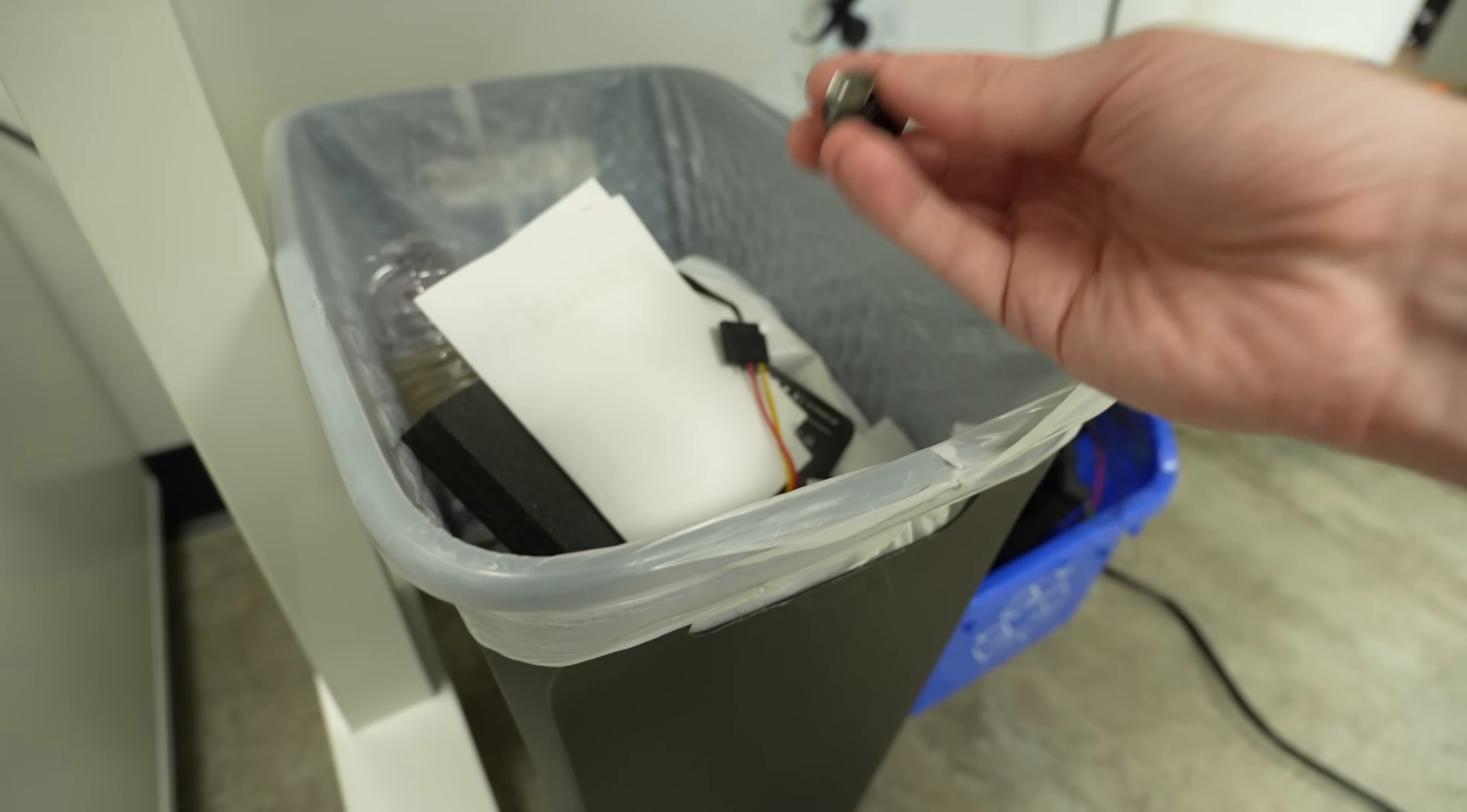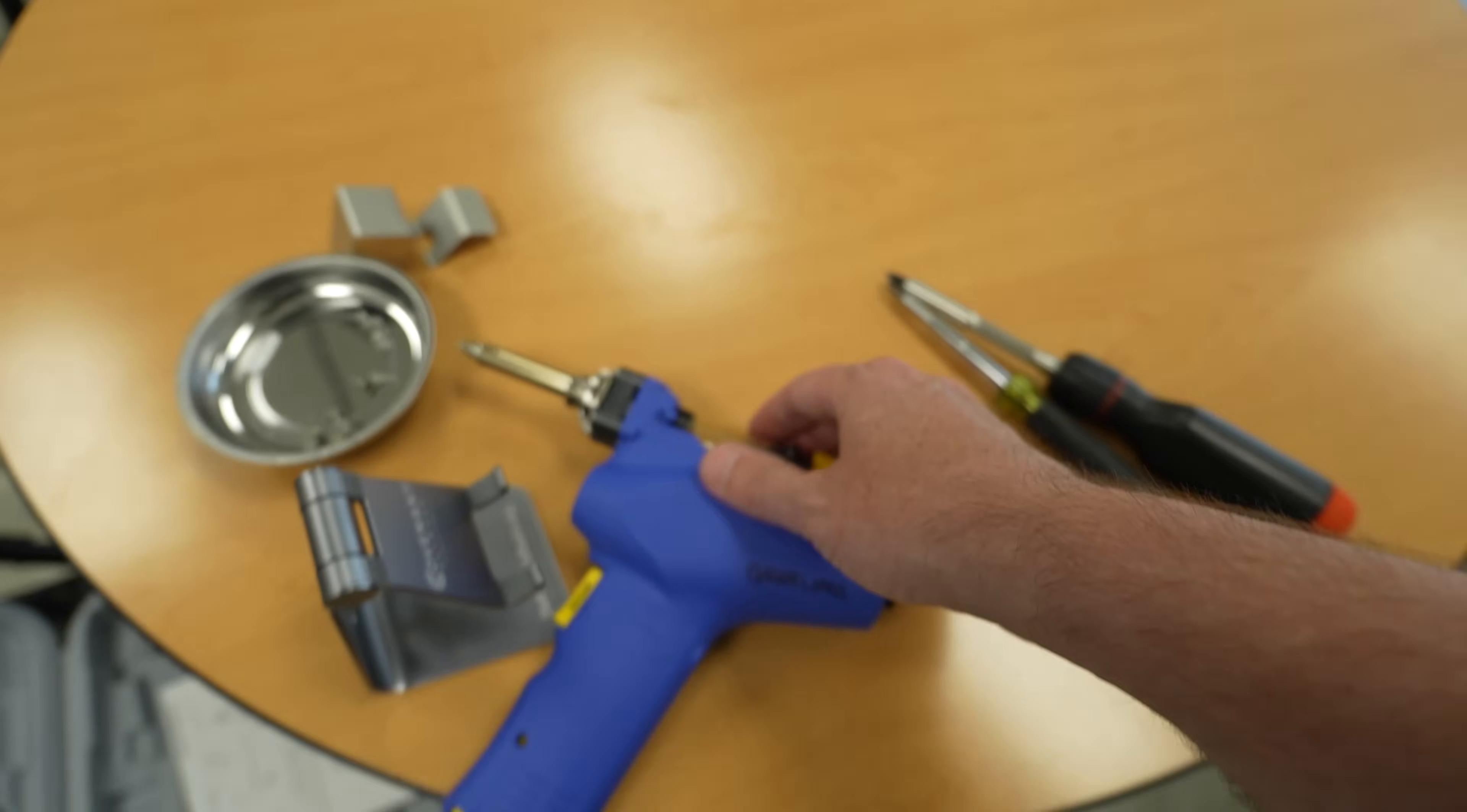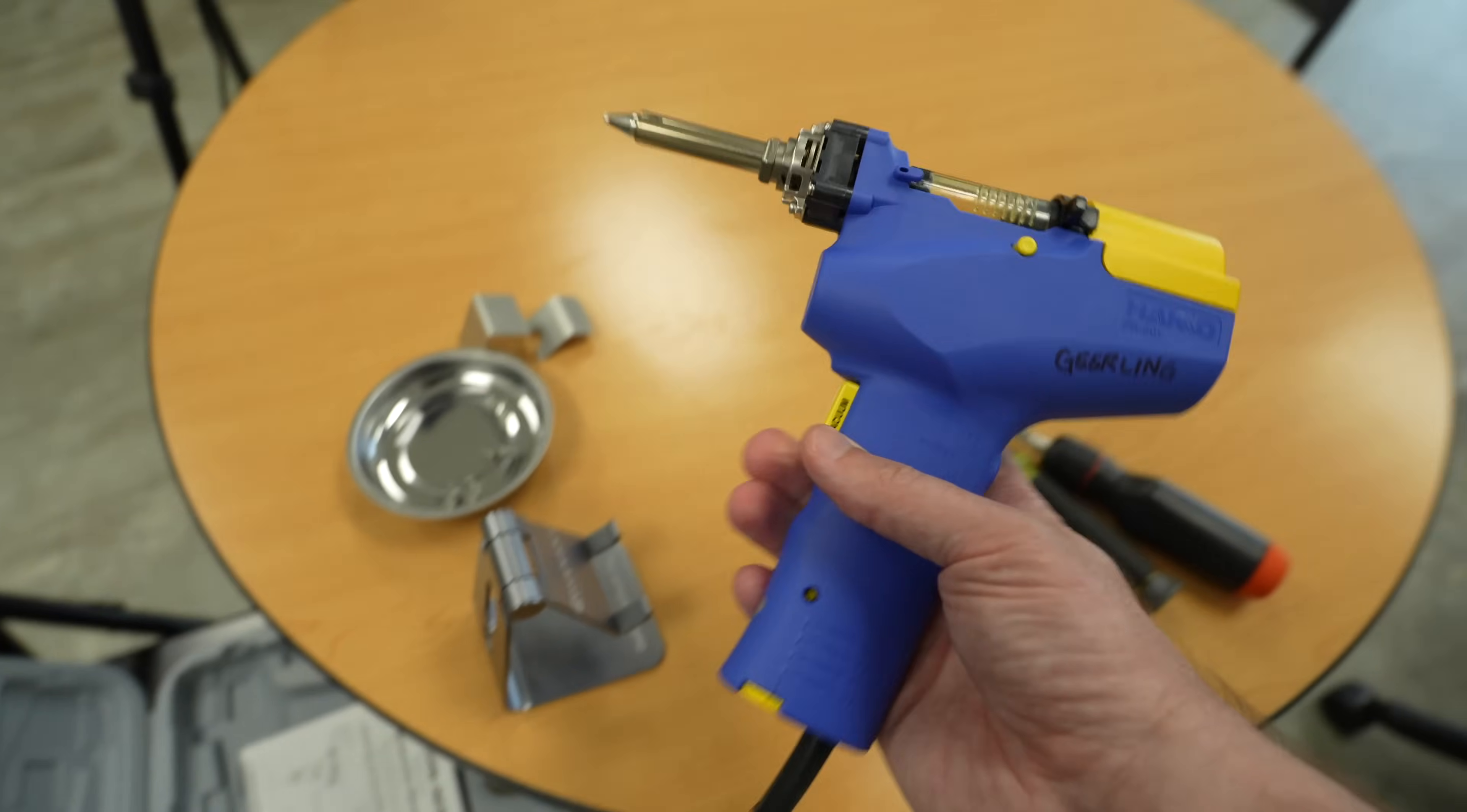You just pop off the filter thing and then dump it and you're done. It was honestly incredible how easy that was compared to my other desoldering tools. When you're finished, you just press this button and it's ready to go again.